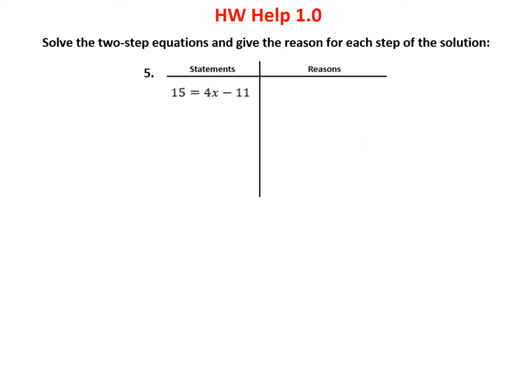Number 5: the only thing different is that our variable is on the right side of the equation. If that concerns you, you can always just flip it around and work the equation as 4x minus 11 equals 15, with the variable on the left. We'll solve it and note the flip at the end.